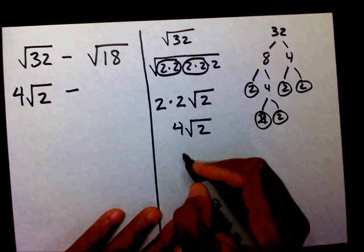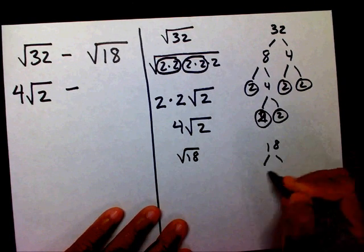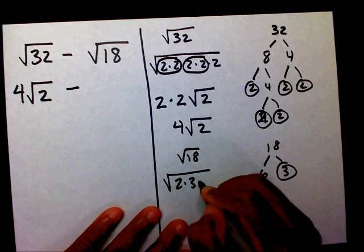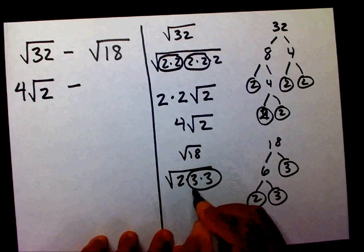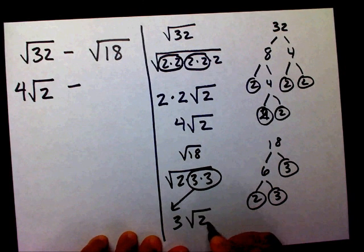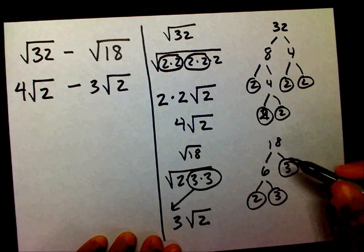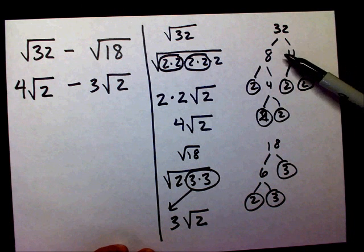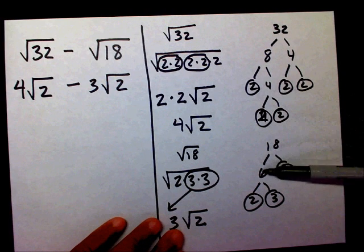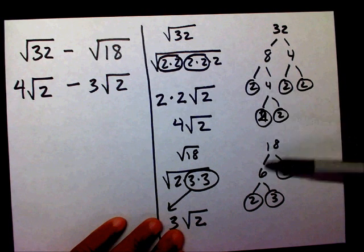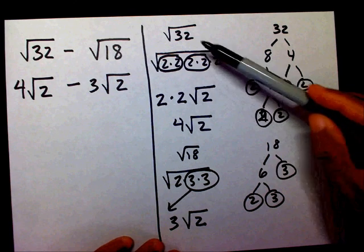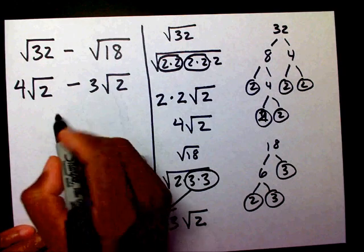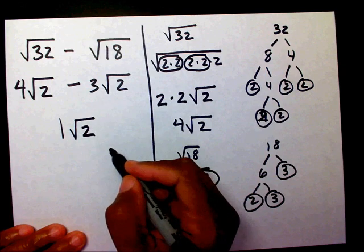Now for radical 18: the factor tree gives 2 times 3 times 3. The 3 times 3 is a perfect square, so 3 goes on the outside and 2 stays inside, giving 3 radical 2. If you didn't follow the factoring steps, please watch the videos on prime factorization or simplifying radicals. Now: 4 radical 2 minus 3 radical 2 equals 1 radical 2, or just radical 2.